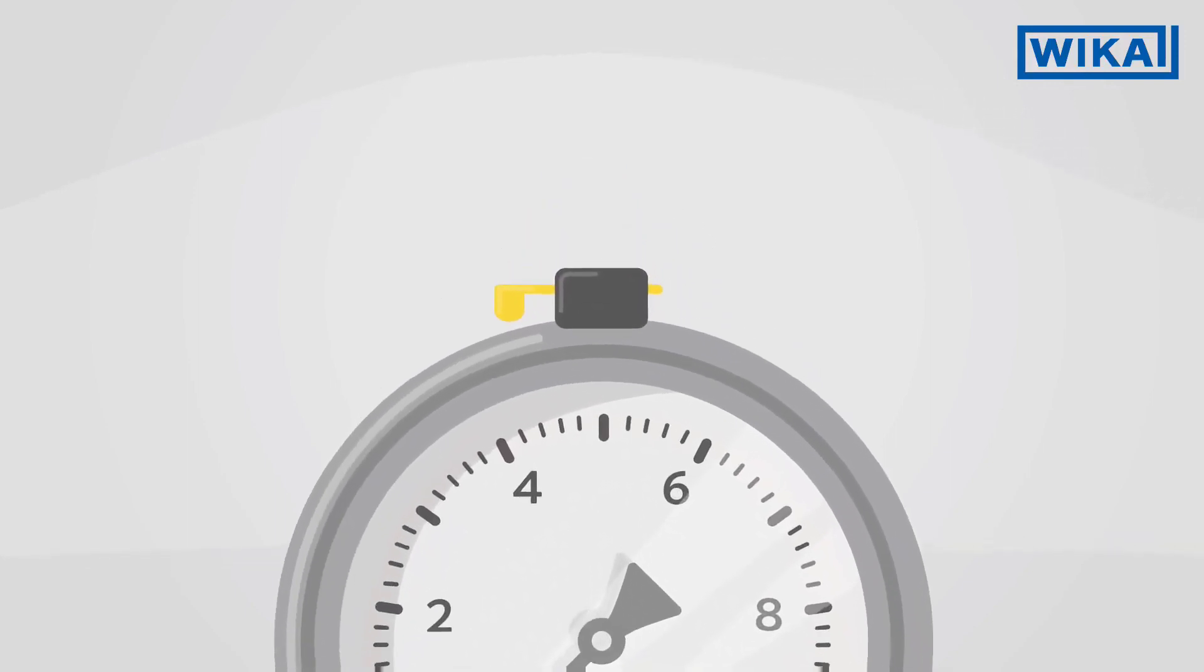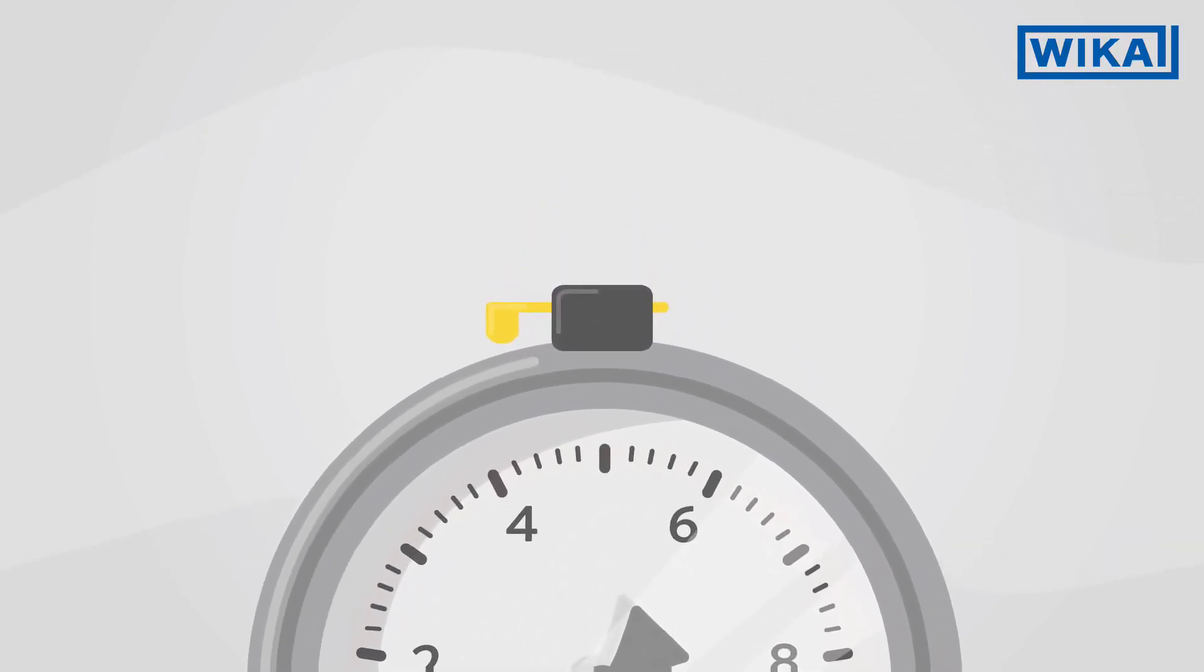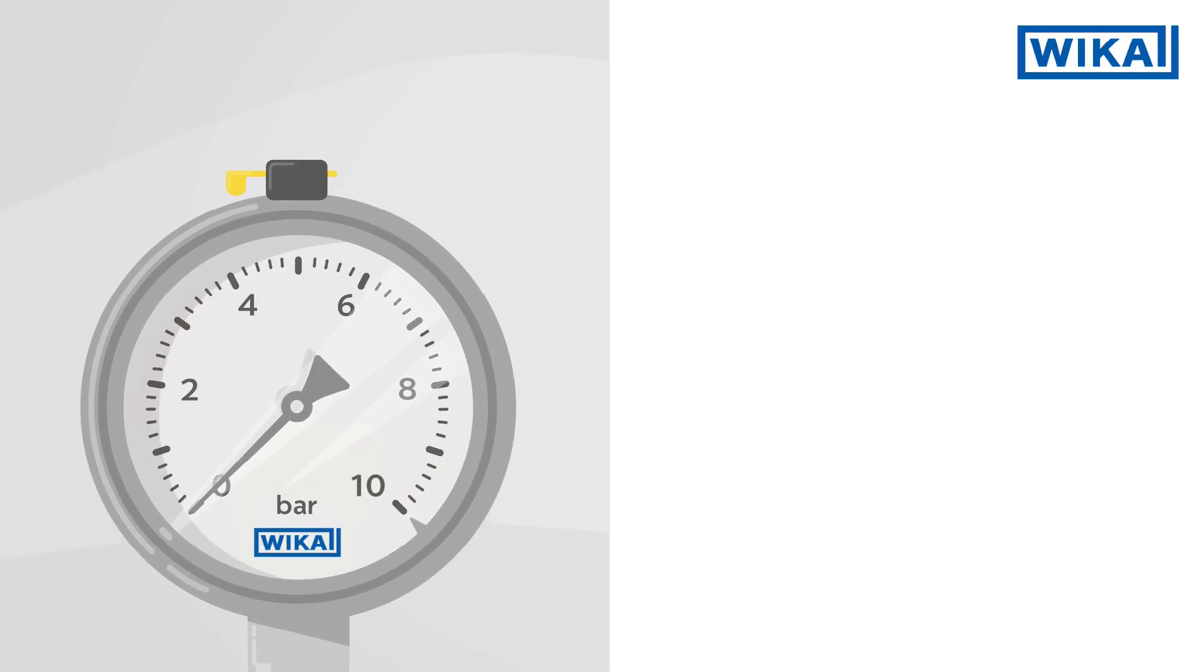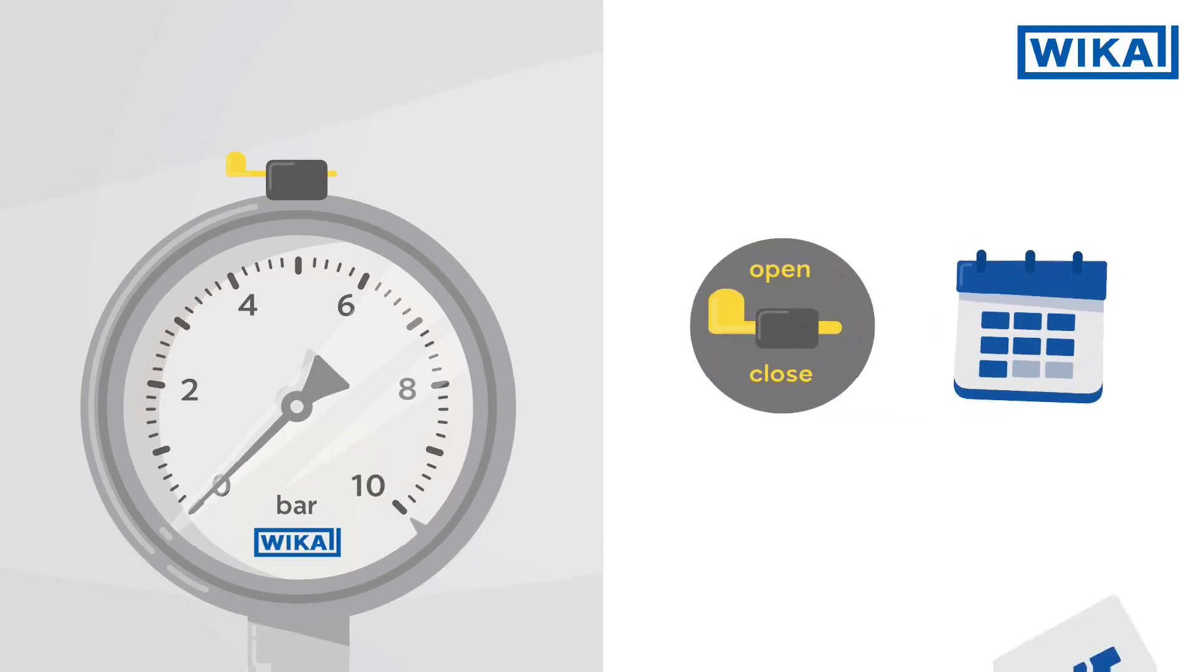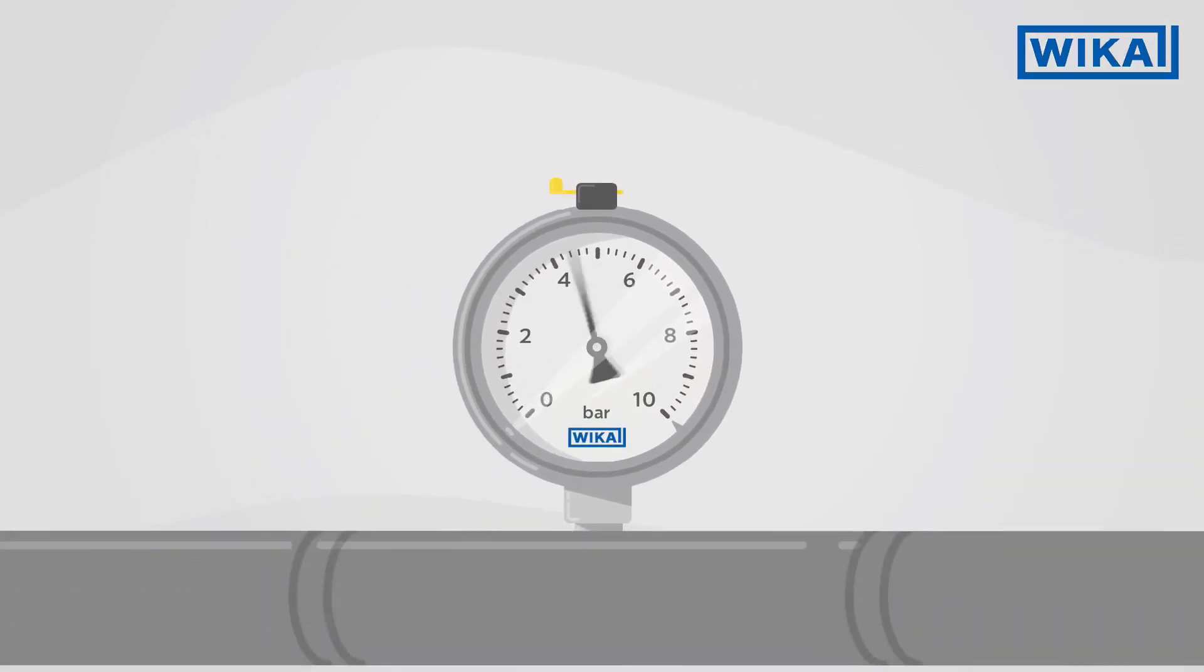This yellow lever can be found on many WIKA pressure gauges. It must be opened when commissioning the pressure gauge and remain open throughout operation. So what function does the lever fulfill?